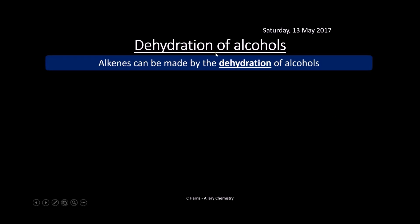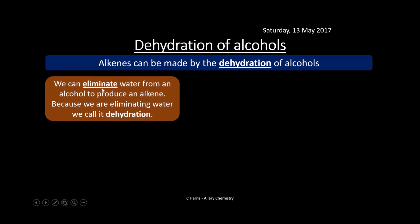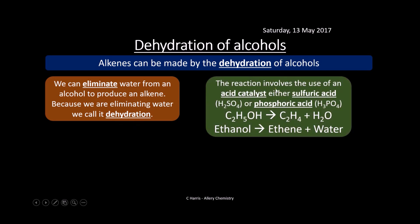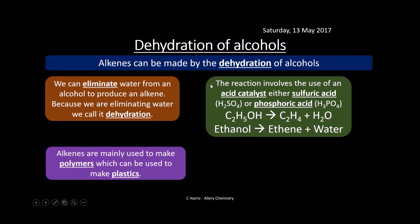Alkenes can be made from alcohols by dehydration — the removal of water — using an acid catalyst (sulfuric or phosphoric acid). For example, ethanol is dehydrated to form ethene and water. You're simply removing water from the ethanol to form ethene. Alkenes are really useful because we can make polymers from them, which are used to make plastics — so it's another useful route to making plastics.